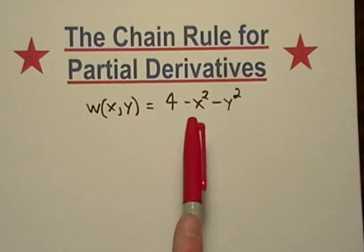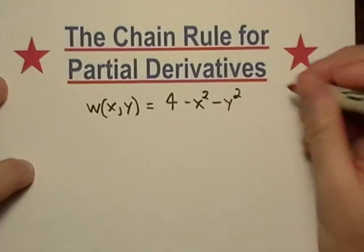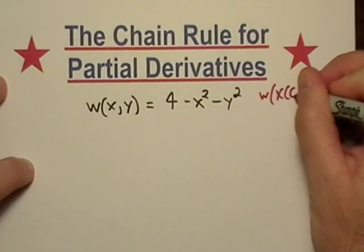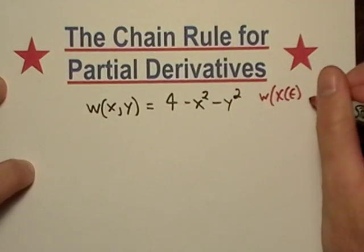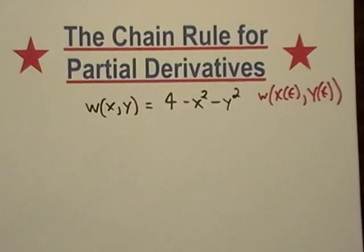Because x equals cosine theta and y equals sine theta. We're not going to do that now, but let's think that w is now a function of x and y, which are functions of t.